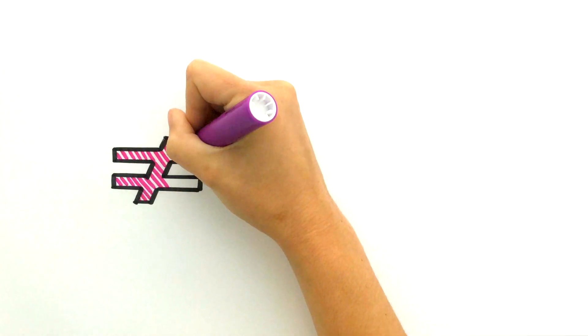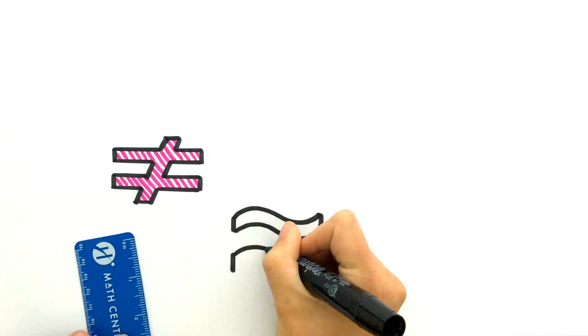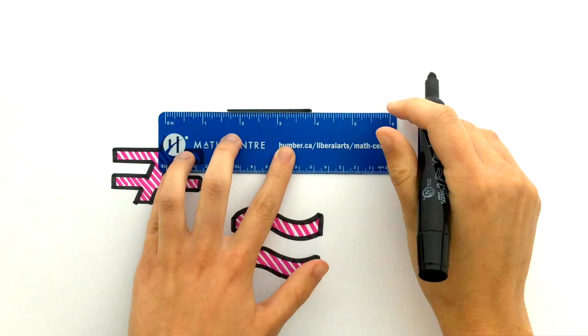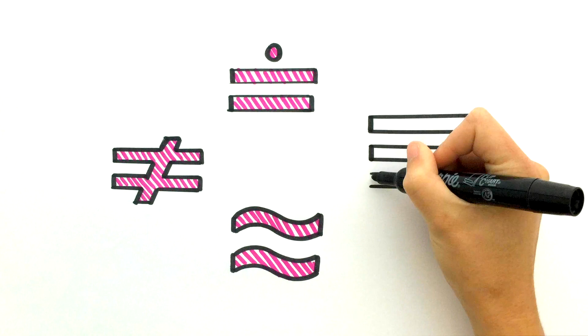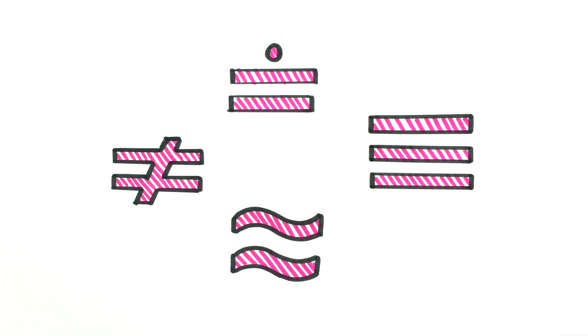as the not equal sign, which has a line through it, approximately equal, which is two wavy lines or two parallel lines with a dot on top, and the sign for equivalence, which is three parallel lines.